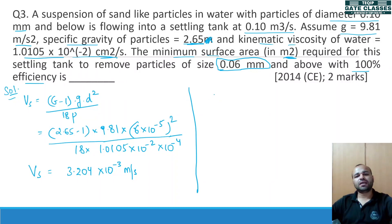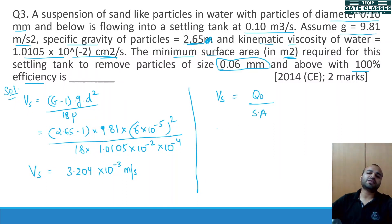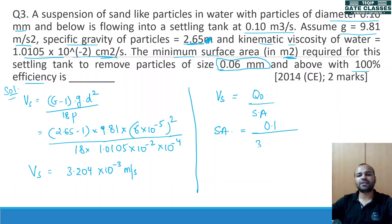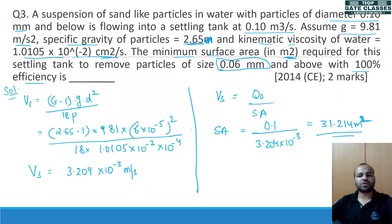Using this settling velocity and the known design discharge, we can find the surface area. Surface area = design discharge / settling velocity = 0.1 / (3.204×10⁻³), which comes out to be around 31.214 m². That is how you solve the numericals for the GATE exam.